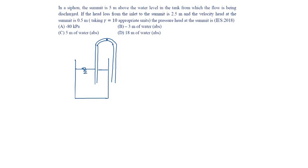In a siphon, the summit is at 5 meters above the water level. This point is B and the water level point is A.